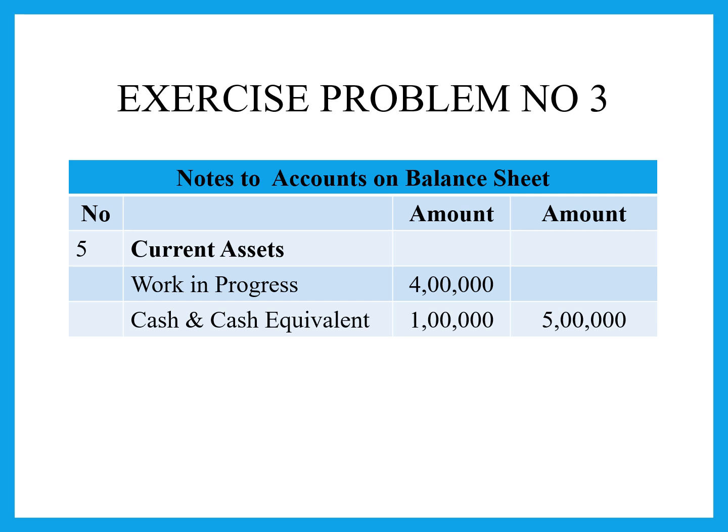Under current assets, we have assets used within the same year. That is work-in-progress — a manufacturing process item that will turn over to finished goods. Work-in-progress and finished goods together are valued at 4 lakh rupees. Cash and cash equivalents are 1 lakh rupees, which may change the next year. That is why these are current assets.